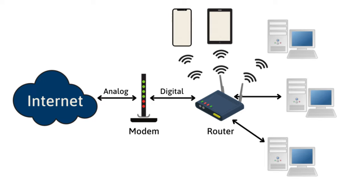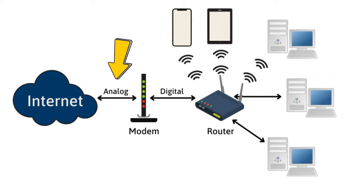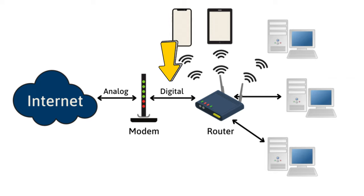How does a modem function? A modem stands for modulator-demodulator. Modulation converts digital data from your network devices, like computers, into analog signals that can be transferred over communication lines like phone or cable lines. Demodulation converts incoming analog signals from the ISP into digital data that your devices can understand and use.